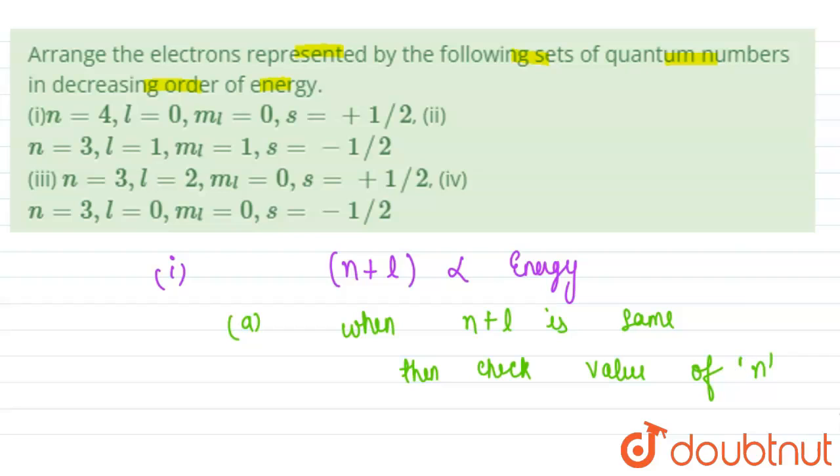So among all the four quantum numbers, the maximum n plus l value is for third. For third, the value of n plus l is 5. For first, the value of n plus l is 4. For last, the n plus l value is 3, and for second, the n plus l value is 4.